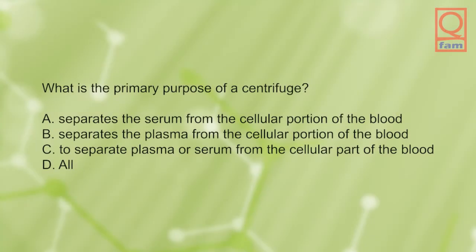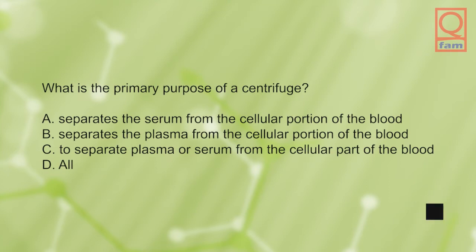What is the primary purpose of a centrifuge? A) separates the serum from the cellular portion of the blood, B) separates the plasma from the cellular portion of the blood, C) to separate plasma or serum from the cellular part of the blood, D) all. The answer is D, all.